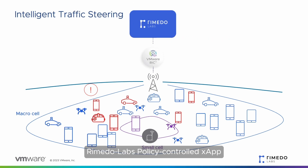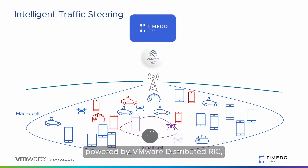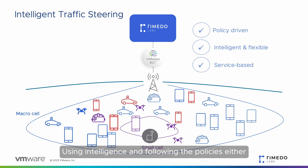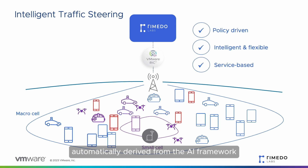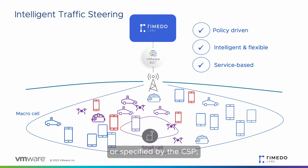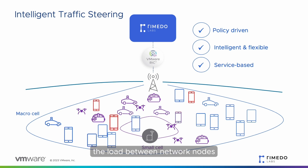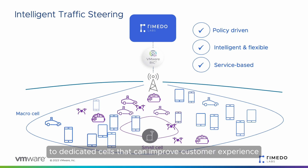Remedo Labs policy-controlled X-App, powered by VMware distributed RIC, helps CSPs by providing service-based and load balancing focused traffic steering. Using intelligence and following policies either automatically derived from the AI framework or specified by the CSP, the Remedo Labs X-App can simultaneously distribute the load between network nodes and offload specific traffic to dedicated cells that can improve customer experience.